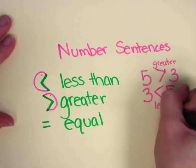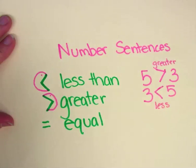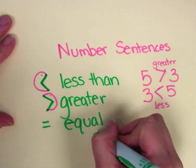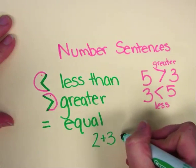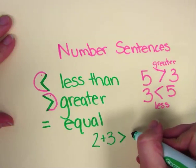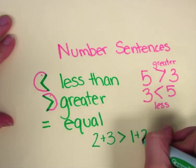You always read from left to right with number sentences. When I have a number sentence written out, such as this one, I have to decide if it's true or if it's false.